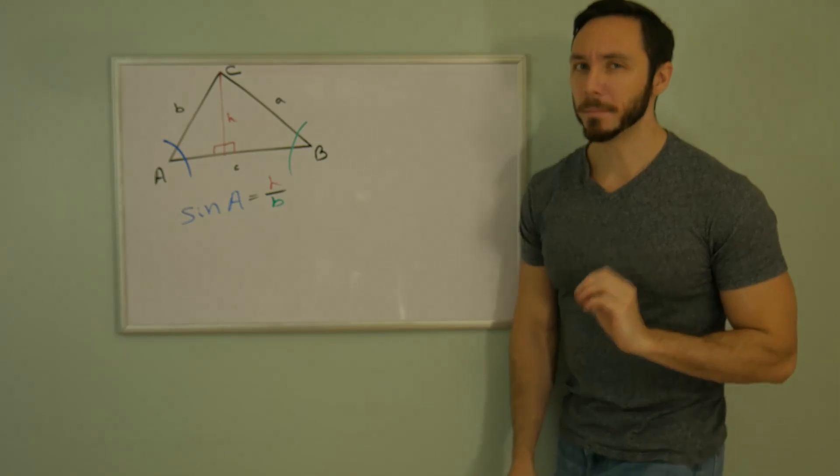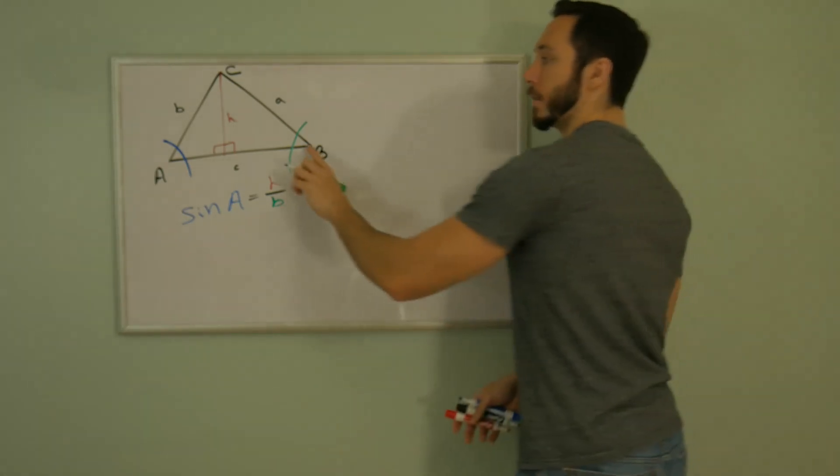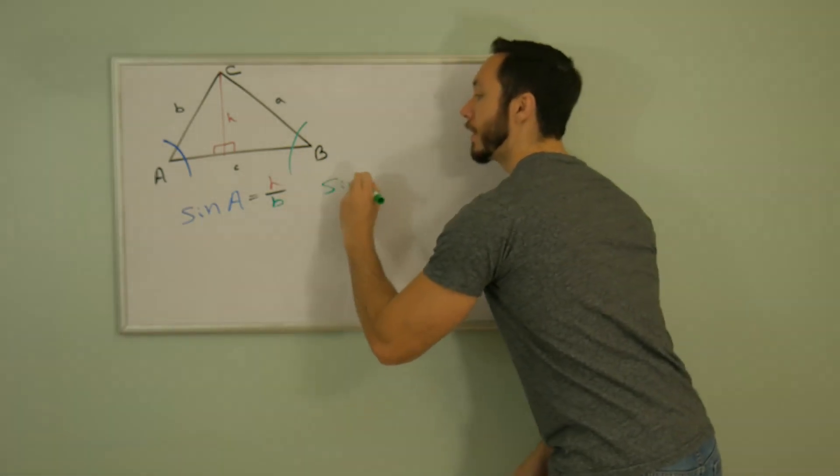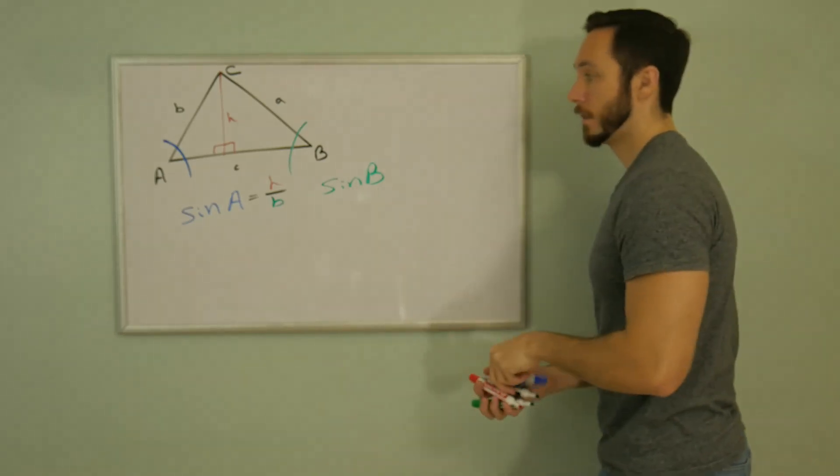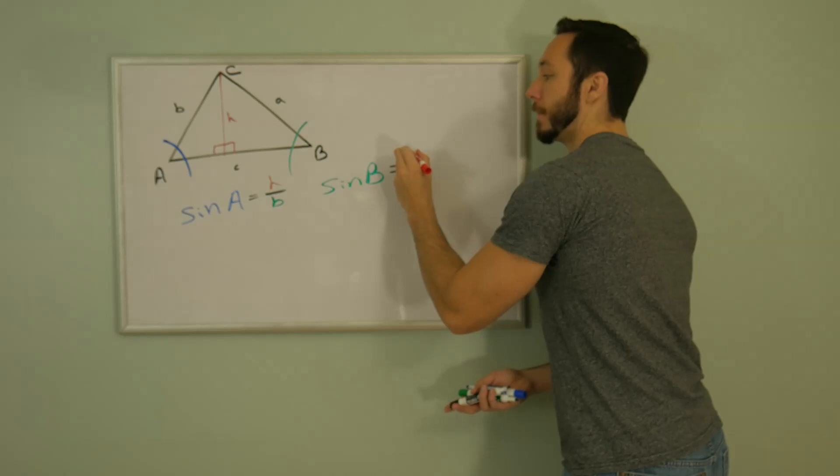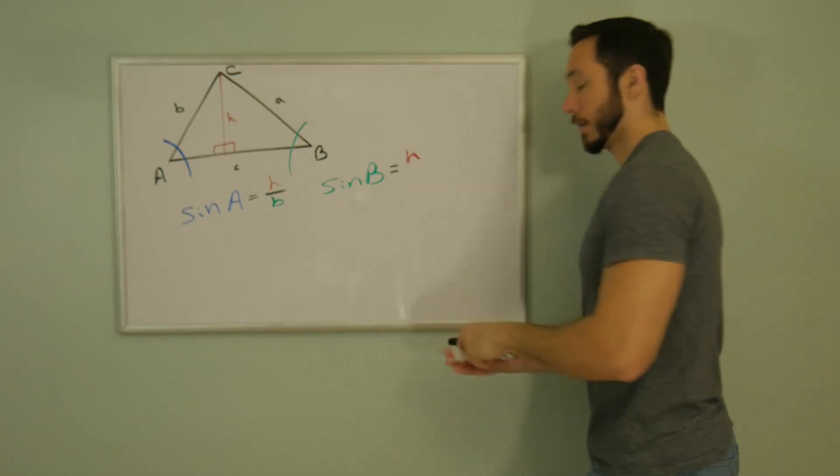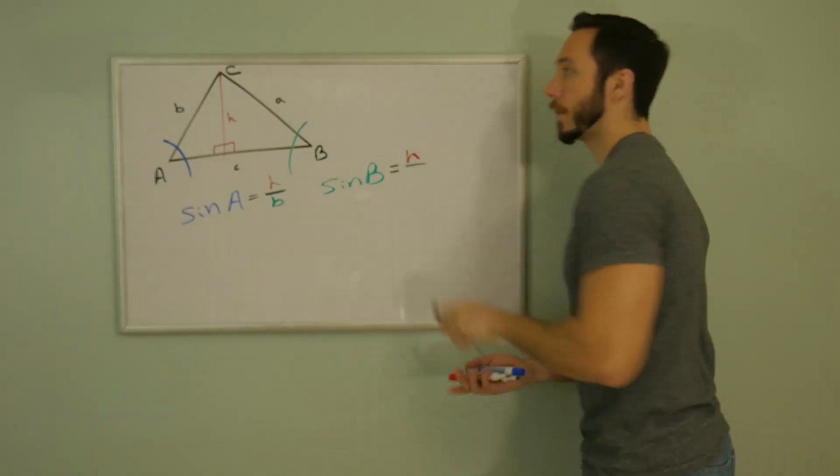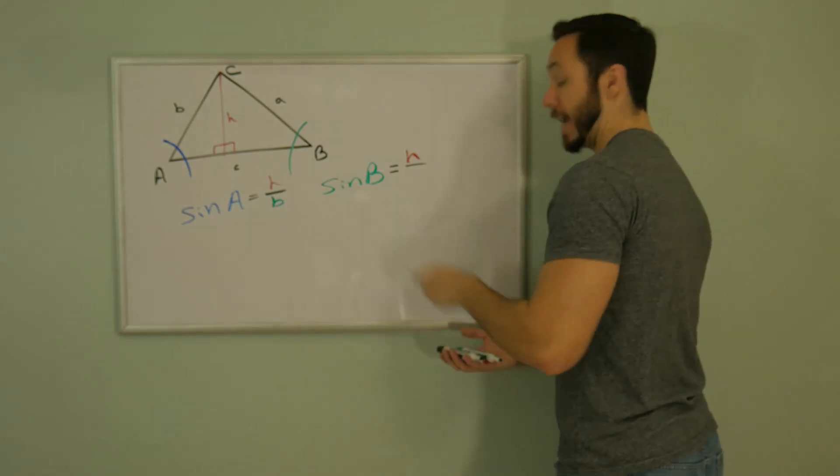You know what? I also like that angle B. So here from angle B, that sine ratio is H over, this time around, A for the hypotenuse.